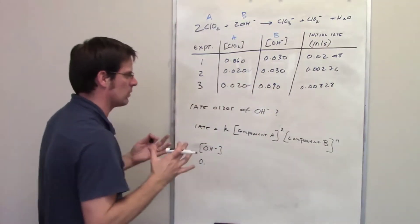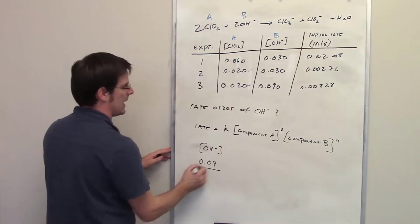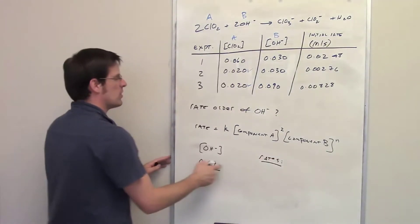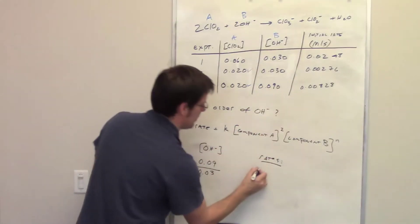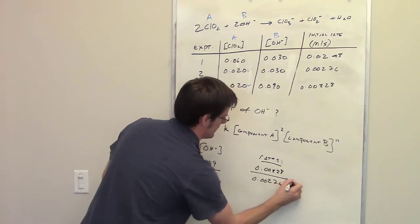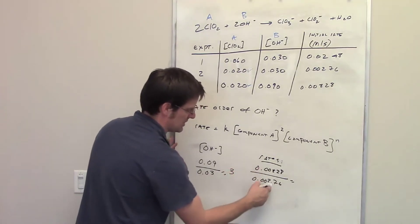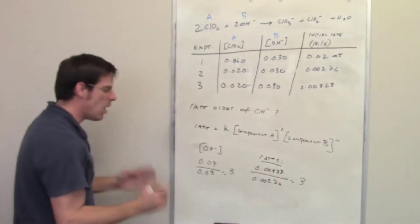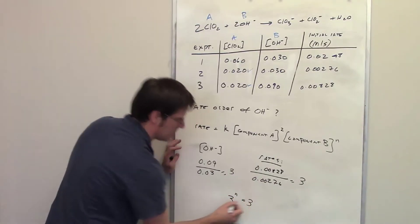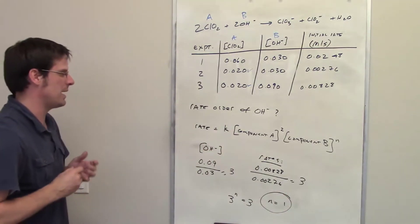In experiment 3, the concentration of hydroxide was 0.09. Dividing by 0.03, which was the concentration in experiment 2, gives 3. The rate when concentration was 0.09 was 0.00828; when set to 0.03, the rate was 0.00276. Dividing those rates also gives 3. So I take 3 raised to the N equals 3, and solve for N. N equals 1. That is the reaction order with respect to hydroxide.